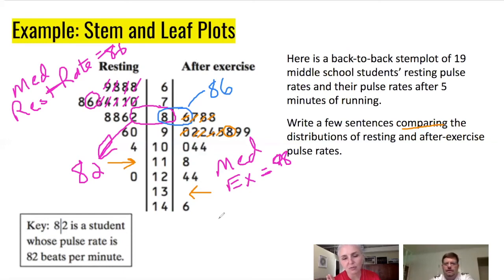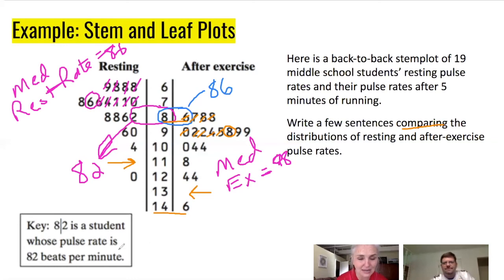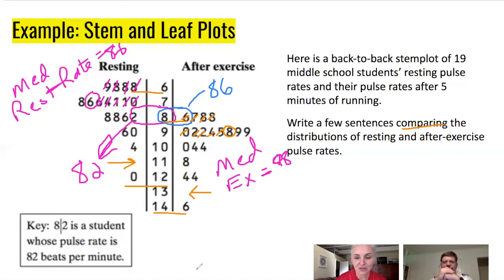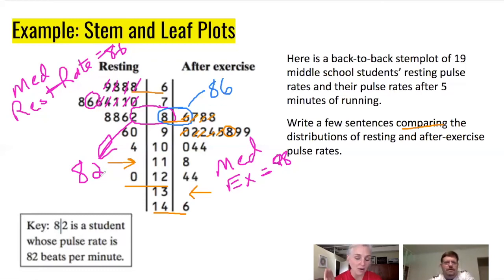For spread, the after-exercise range is 146 minus 86, which is 60 beats per minute. The resting range is 120 minus 68, which is 52 beats per minute. You would say the after-exercise range is larger than the before-exercise range. Mention the actual values and use a comparative word.